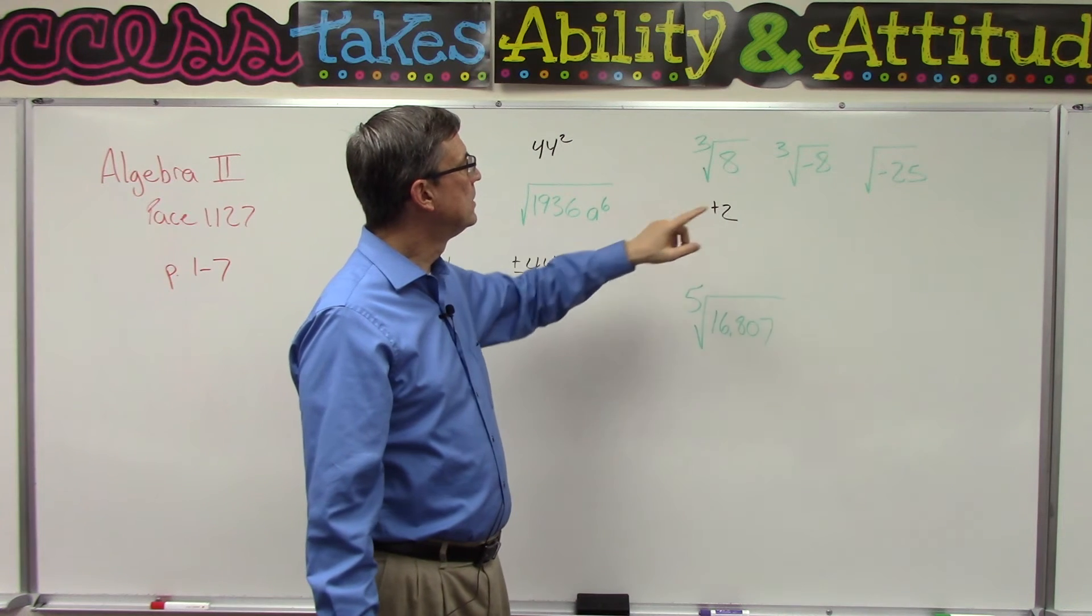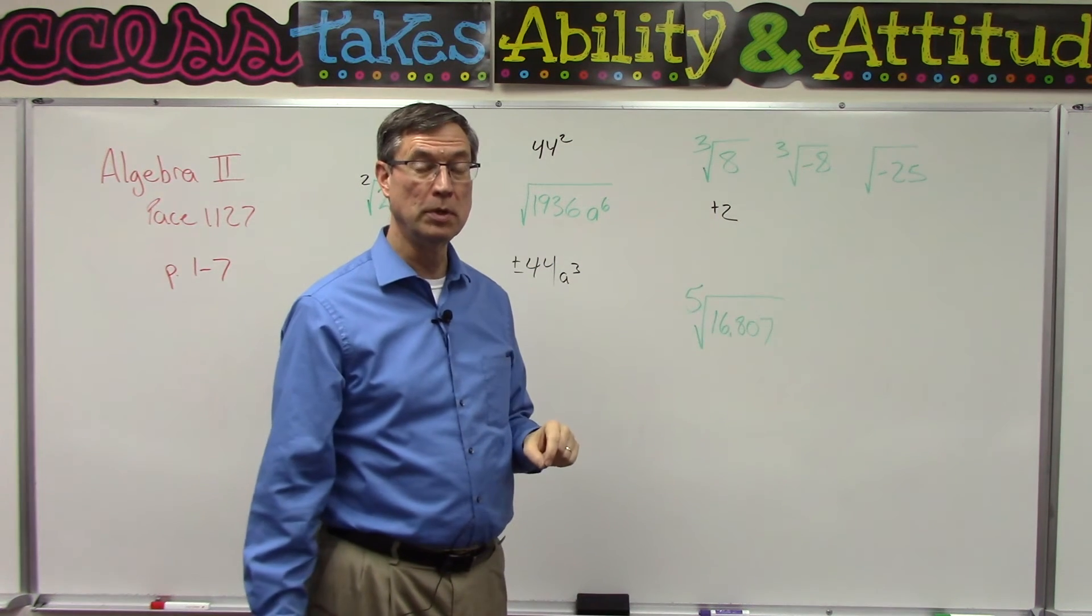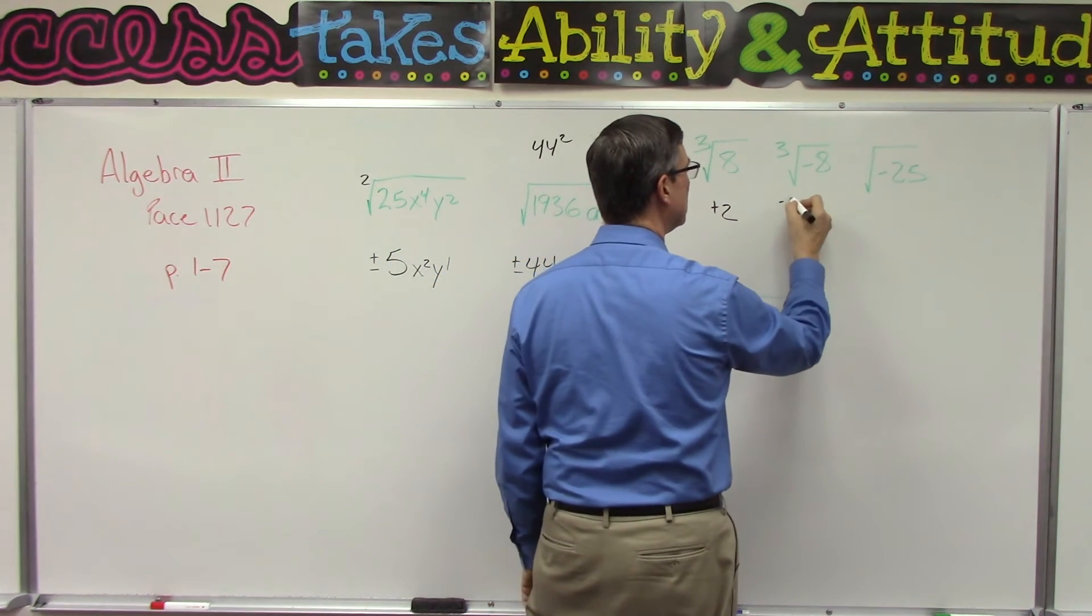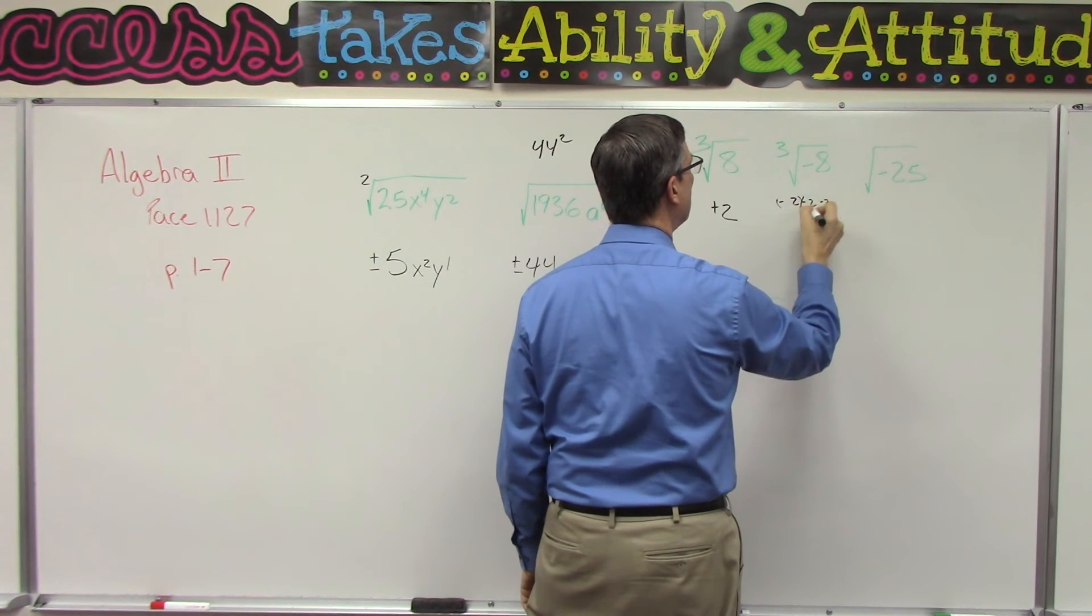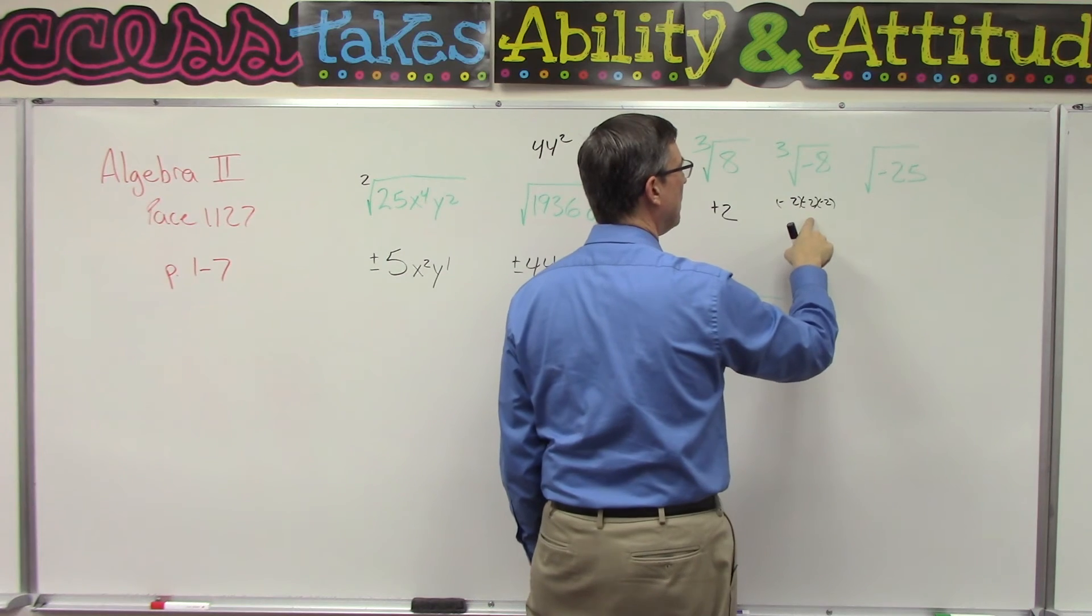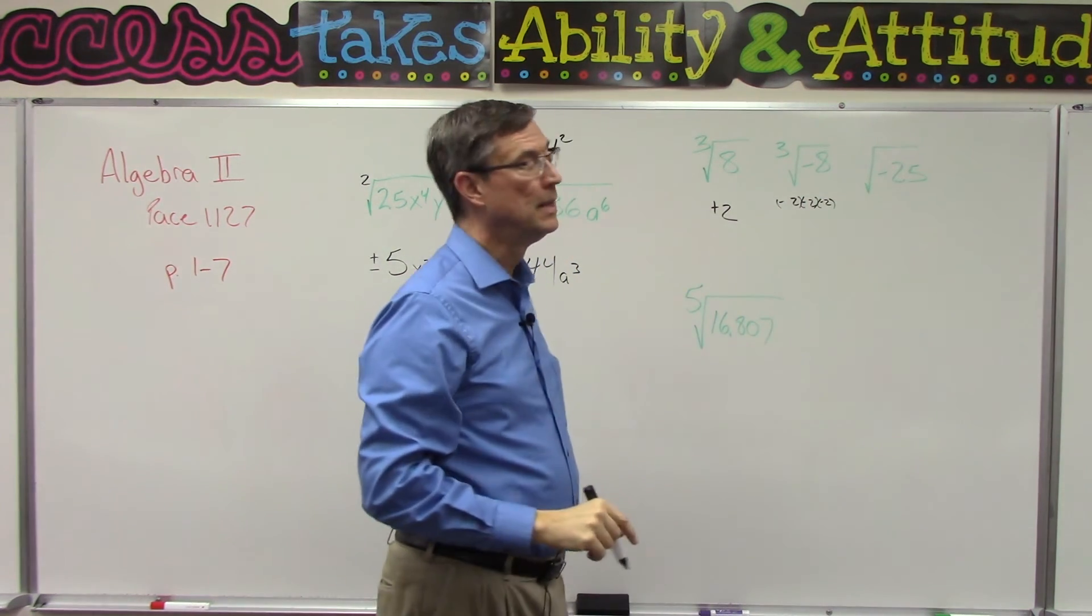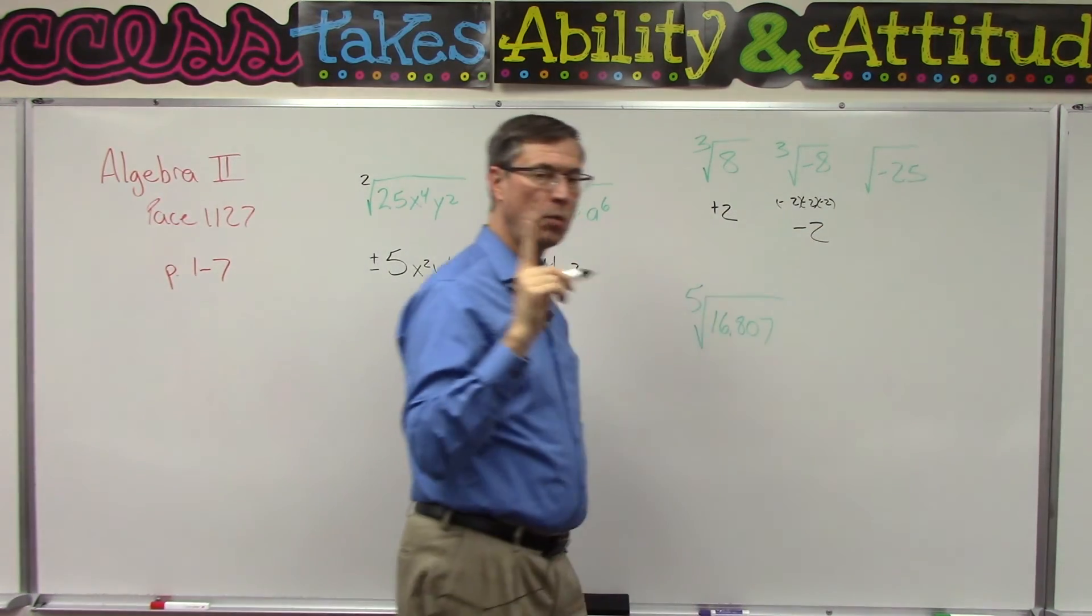Because negative 2 times negative 2 times negative 2 would actually become negative 8. You see how multiplying the three negatives, this becomes a positive 4, and then positive 4 times negative 2 would be the negative 8. So in this case, this answer is only negative 2. I get one answer. Over here, I had two possible answers. Here there's only one.